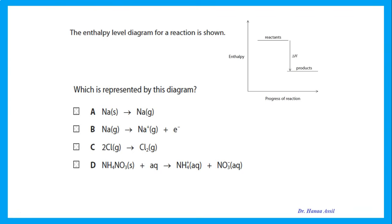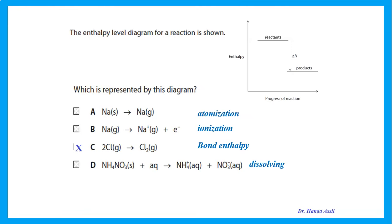The enthalpy level diagram for a reaction is shown. When the products have less energy than the reactants, this is exothermic. Changing sodium solid to sodium gas is atomisation; changing sodium gas to sodium ions is ionisation. When joining two chlorine atoms to form Cl2, this is the bond enthalpy — it gives out the amount of energy needed to break that bond, or the energy released when a bond is formed.